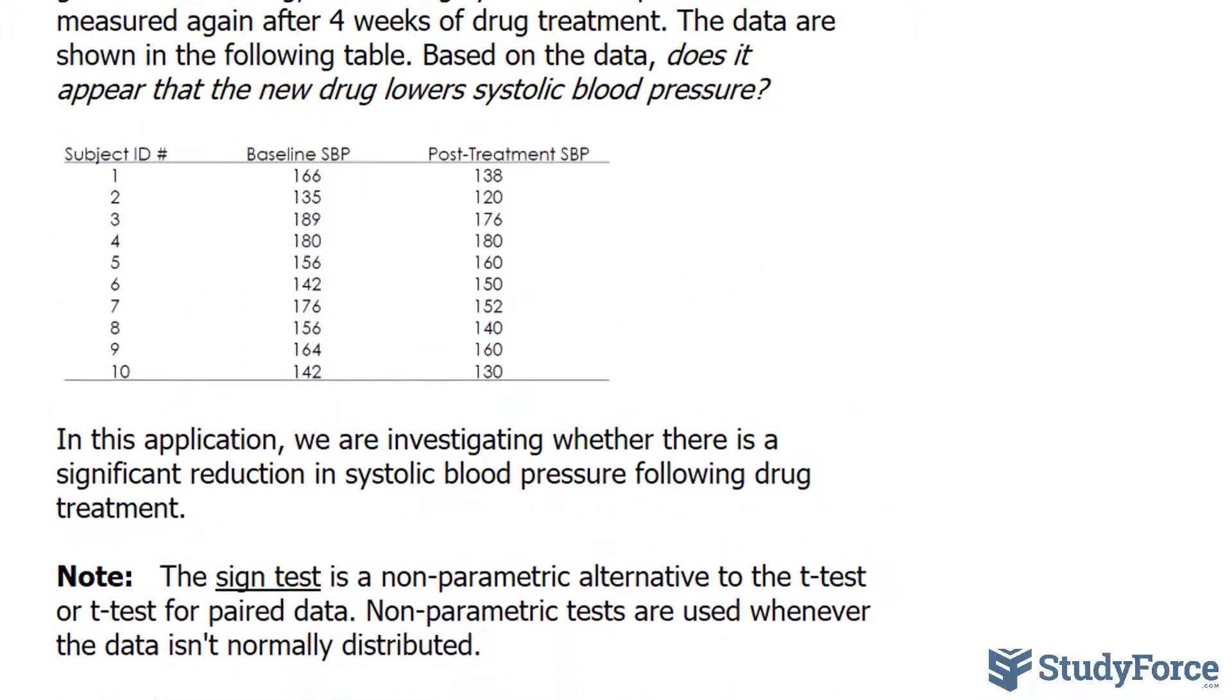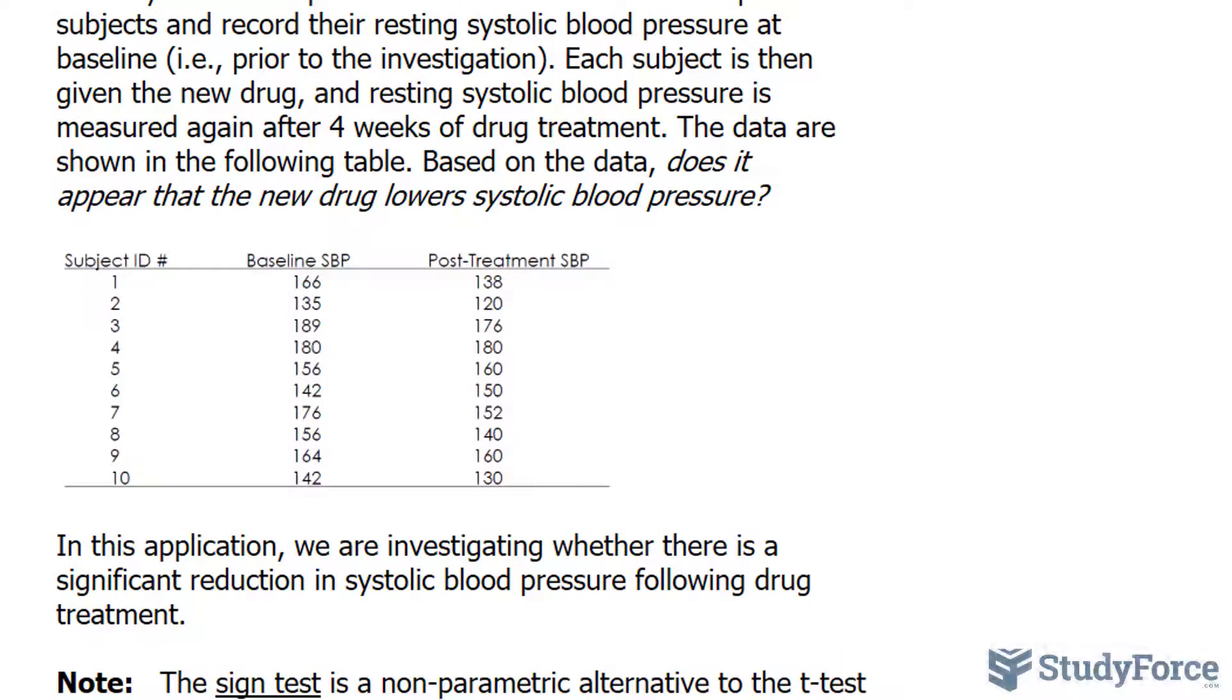Let's take a look at that data and determine which rows represent plus or minus direction. To get the direction, we subtract 166 with 138. That would give us a positive difference, so we write down plus. Subtracting the post with the base for subject 2, again plus, the difference is 15. Another plus value for subject 3, there's no difference for subject 4, subject 5 and 6 are both negative, and the rest are positive.